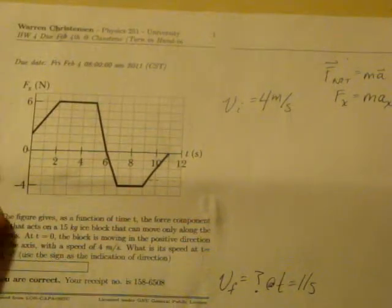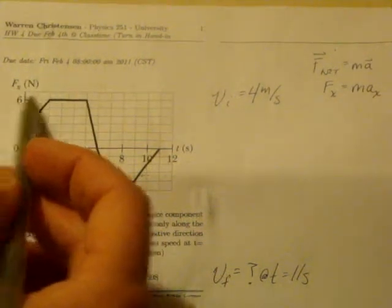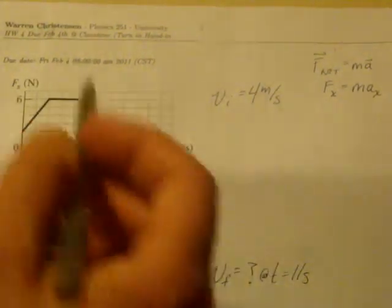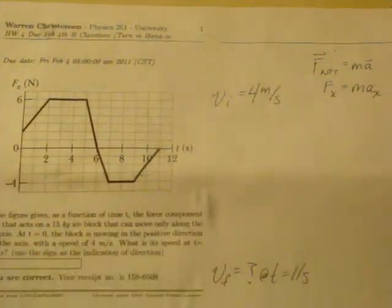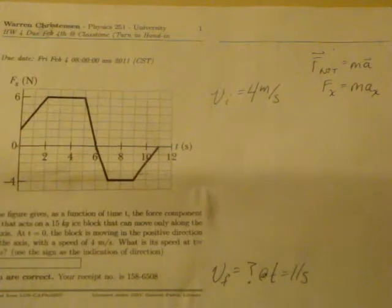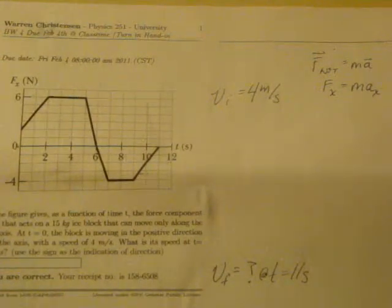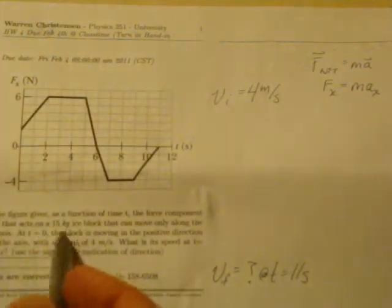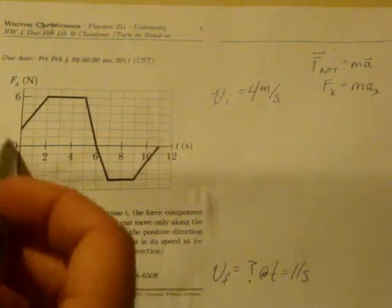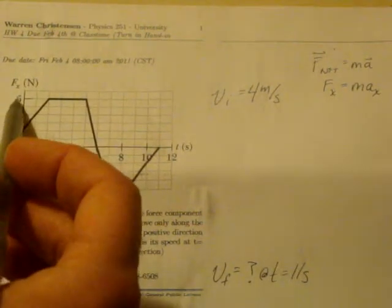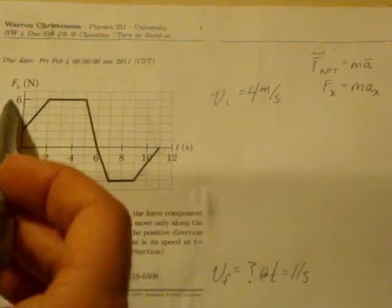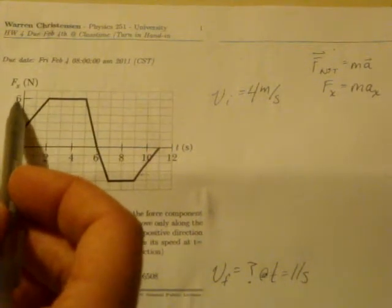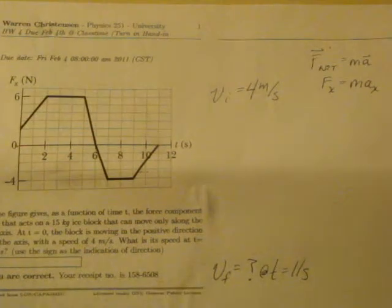So we can do one of two things. We can either rewrite this whole graph here in terms of acceleration versus time by simply dividing by whatever the mass was for your particular problem. And that would simply change the values of this function. So my mass of my object is 15 kilograms, so my graph would go from 0 here to 6 fifteenths meters per second squared. So that would be 6, the force here, 6 newtons divided by the mass, 15 kilograms.